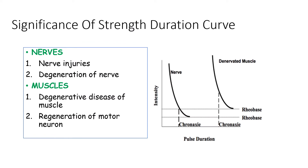The significance of knowing this strength-duration curve is that, for example, in nerve injuries or degenerations of the nerve, it can compare the excitability of the nerve to its normal physiological state. Similarly, in the muscle, it can help in diagnosis and prognosis of degenerative disease related to muscle or the regeneration of motor neurons. You can see and compare the chronaxy of both nerve and the denervated muscle in this figure.